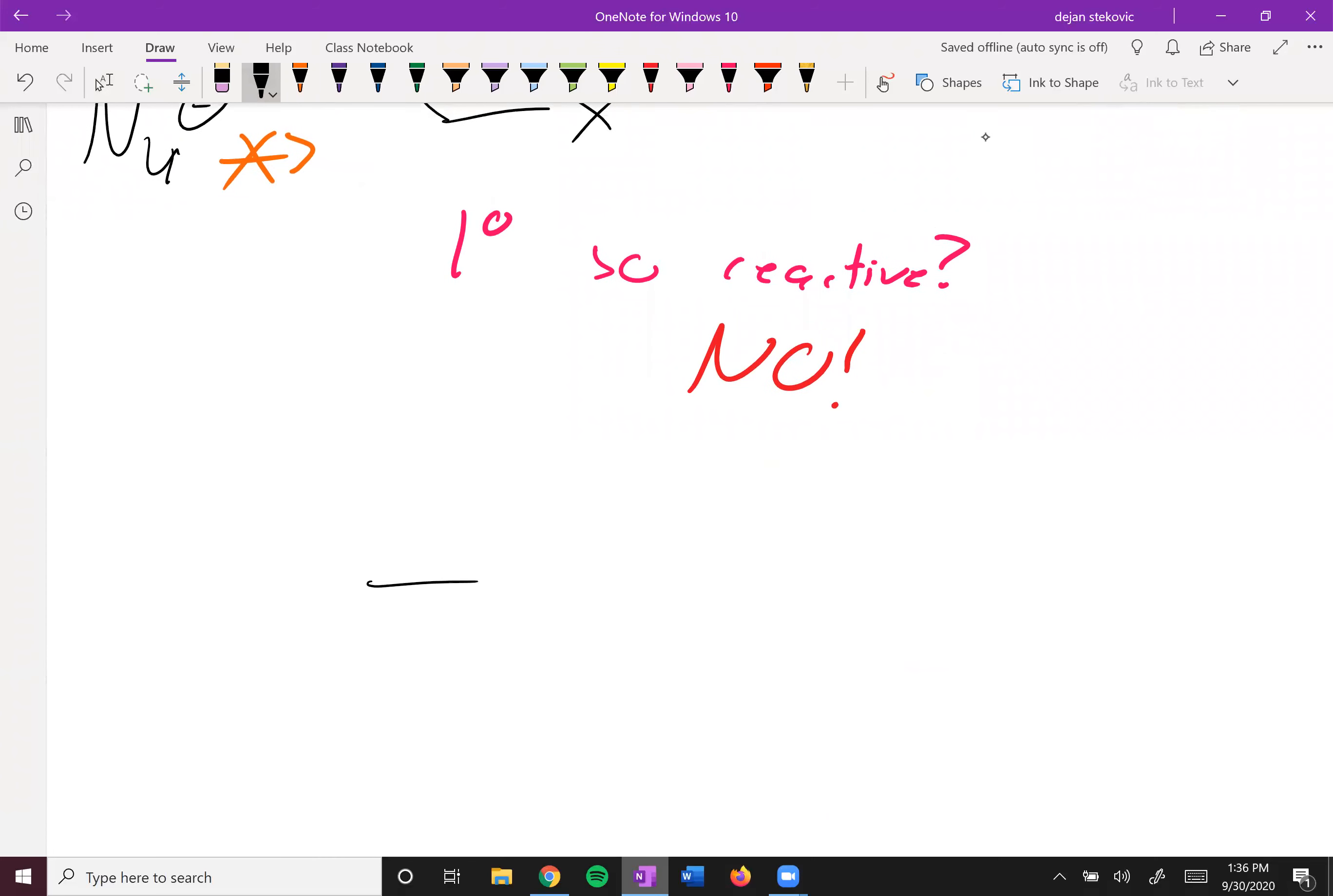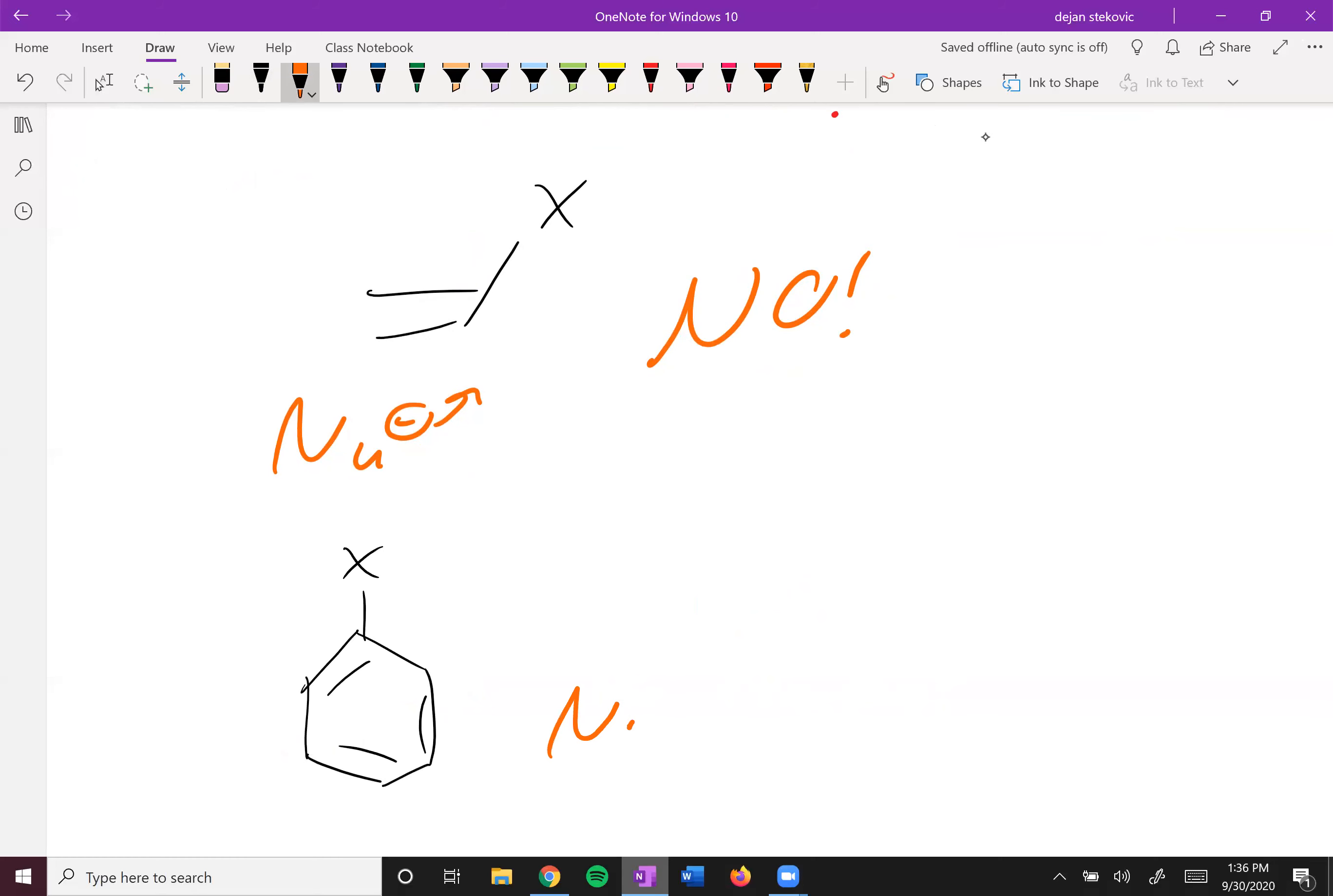Another thing to note is that if the halogen is connected to an SP2 carbon, there's no SN2. Or, it's kind of the same thing, but if this halogen is on your benzene ring, your nucleophile also cannot do this backside attack. So it only happens with a halogen on an SP3 hybridized carbon.